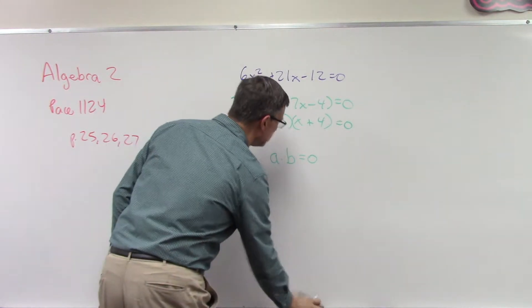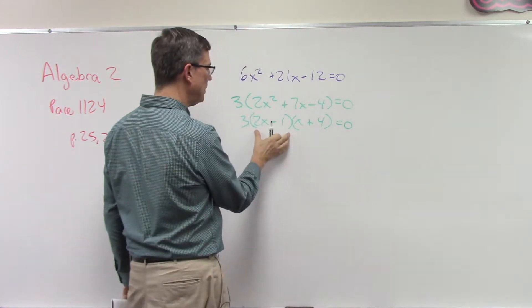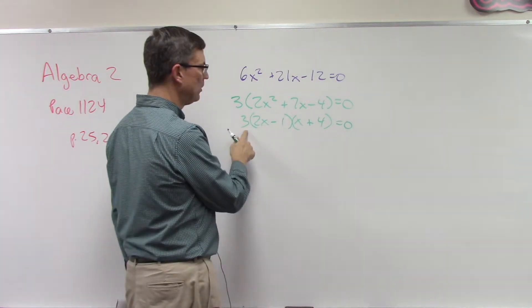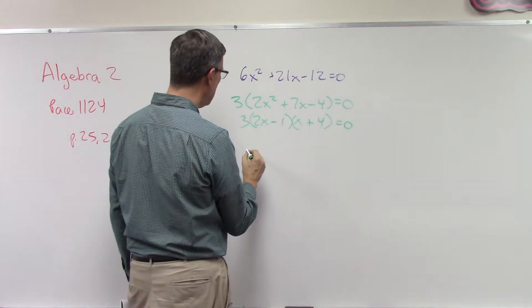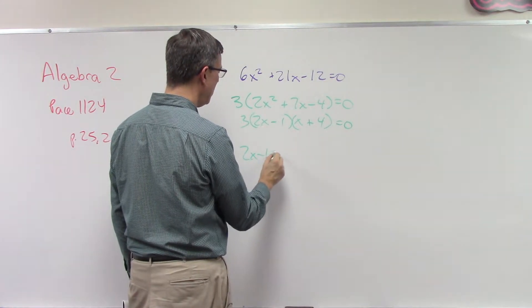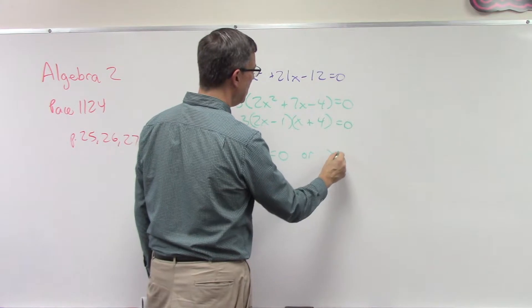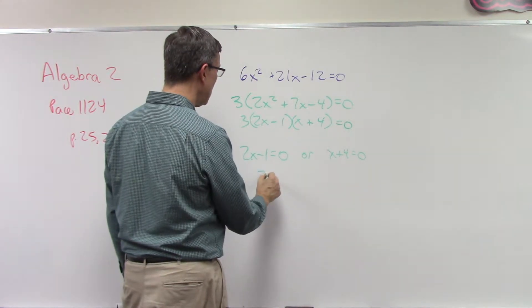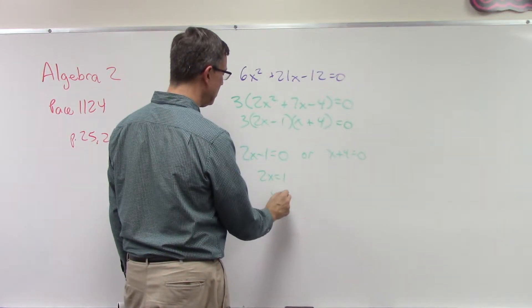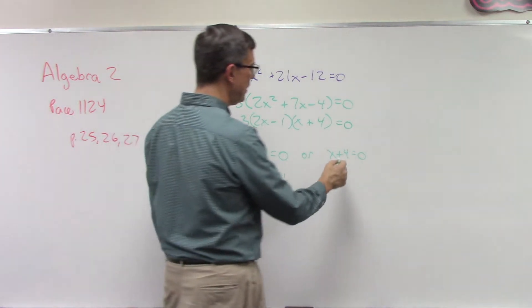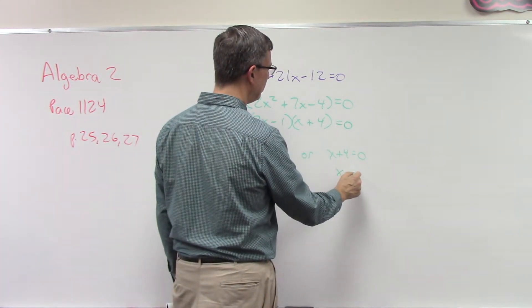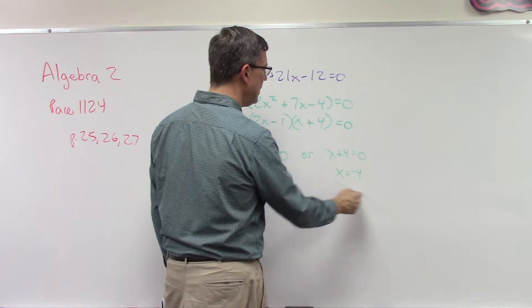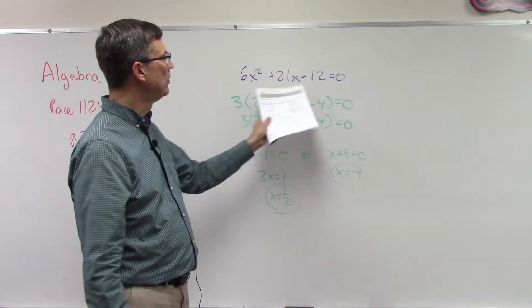In this illustration here, look, I have a quantity times a quantity and it has to equal 0. Now obviously 3 doesn't equal 0, so we can ignore the 3. But I can say this 2x - 1 has to equal 0, or x + 4 has to equal 0. Now if I solve for x, 2x equals 1, so x equals a fraction. And then over here we can subtract the 4 from both sides and get negative 4.